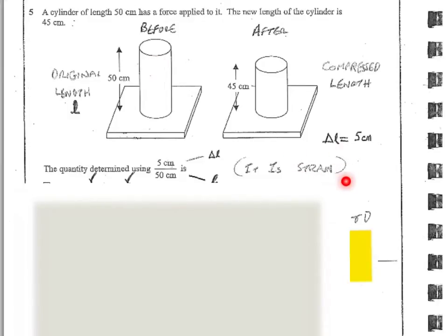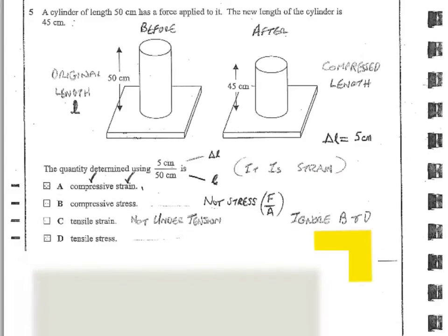And what we can do then is look at the options and say, well, we've got stresses and strains. So we can immediately ignore the two that are stresses because this isn't a stress. Stress remember is force over area. So it's not stress. So we can ignore B and D. It's strain we're looking for. And only one of these is a compressive strain. Both of them are a strain, but only one is a compressive strain. So it's A we're looking for. So the correct answer here is A.